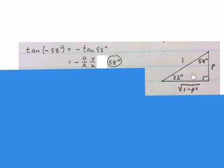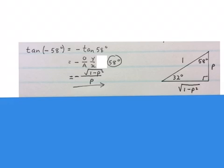So I stand here. My opposite is here, and my adjacent is here. So this will be my final answer for tan minus 58 degrees.